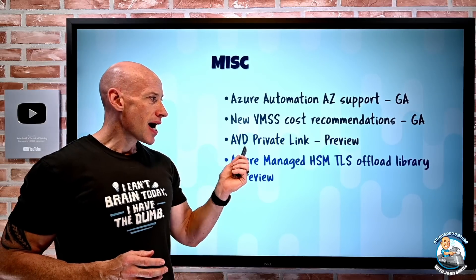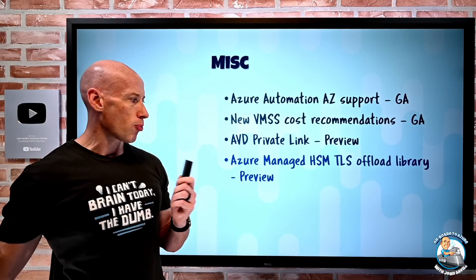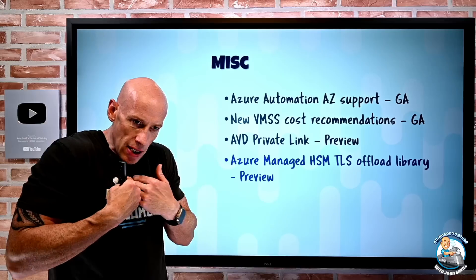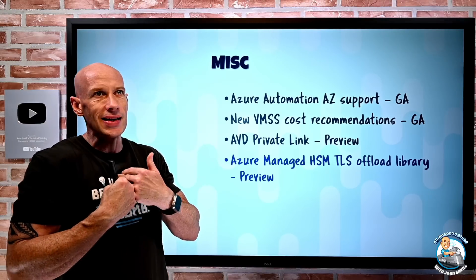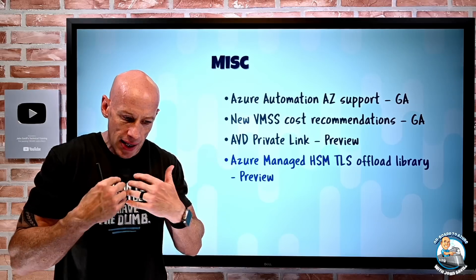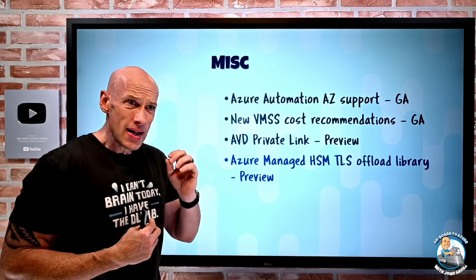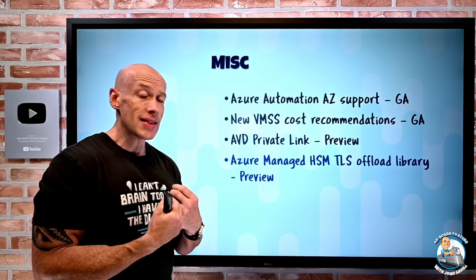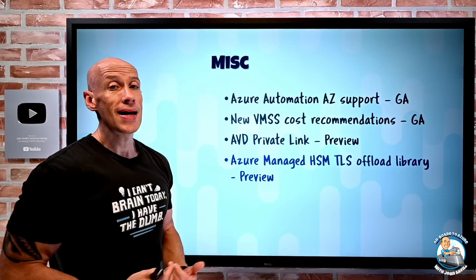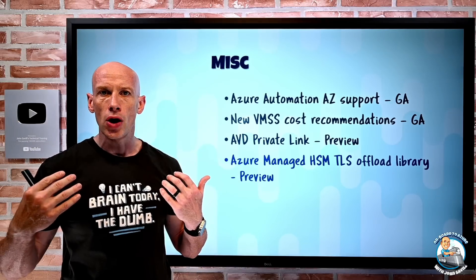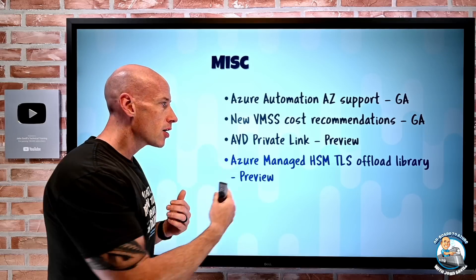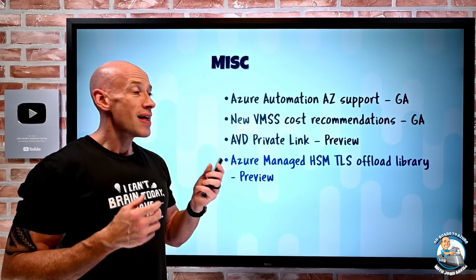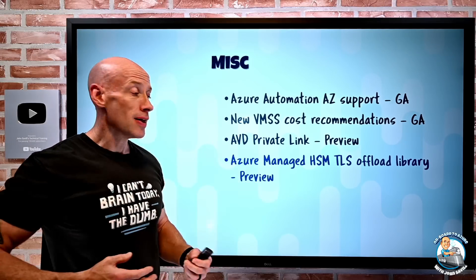Azure Managed HSM TLS offload library is in preview, as part of Key Vault. Managed HSM gives you your own single-tenant FIPS 140-2 level 3 validated hardware security module for your keys. What you can now do is for certain virtual appliances — F5 Big-IP and NGINX — when they have to do TLS, they can offload that TLS operation, taking away the CPU burden of the cryptographic work and letting your dedicated HSM do it. There's a library leveraged to enable that offload, and that's now in preview.